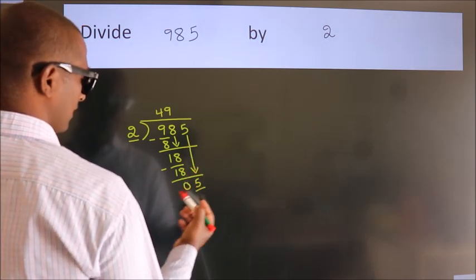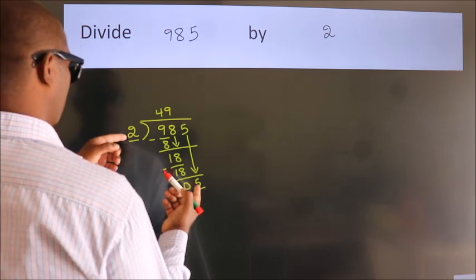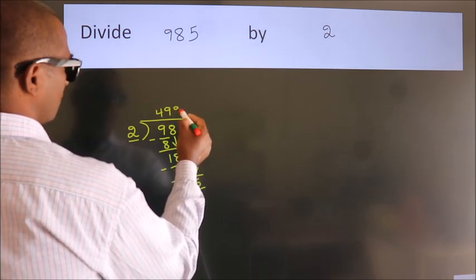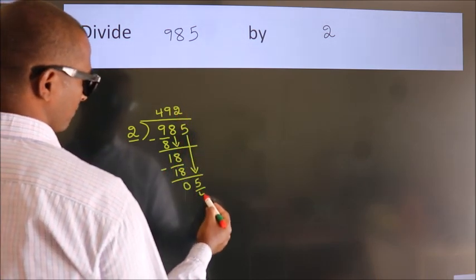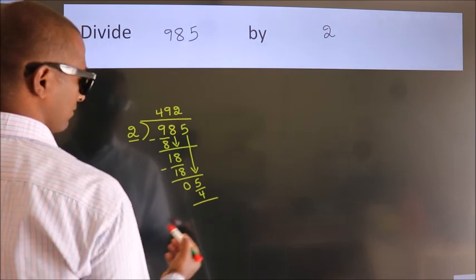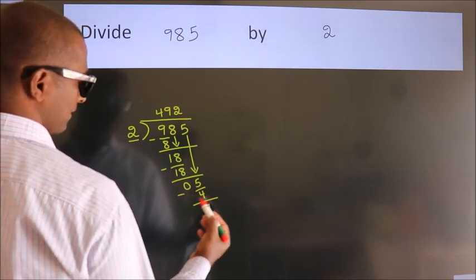A number close to 5 in 2 table is 2 twos 4. Now we subtract. We get 1.